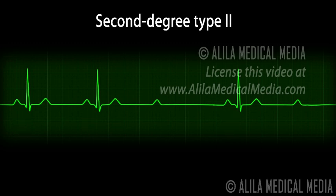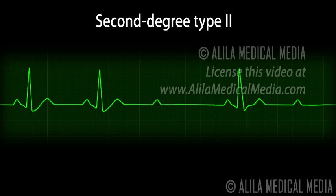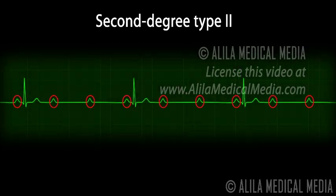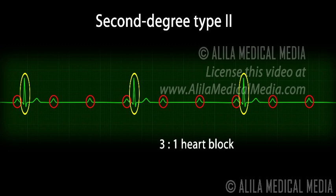In the majority of cases, the successfully conducted QRS complexes may appear broader than usual. In some type 2 blocks, there is a fixed number of P waves per QRS complex. In this example, there are three P waves for every QRS complex, and the condition is described as three to one heart block. However, as the nature of type 2 block is unstable, this ratio is likely to change over time.